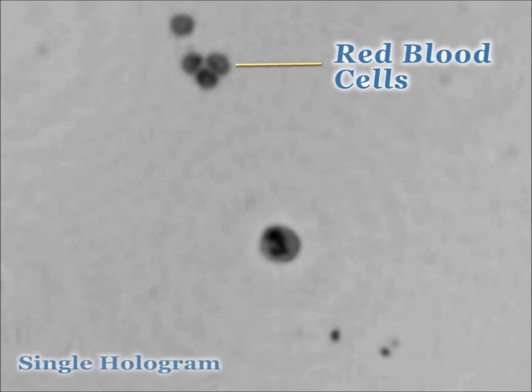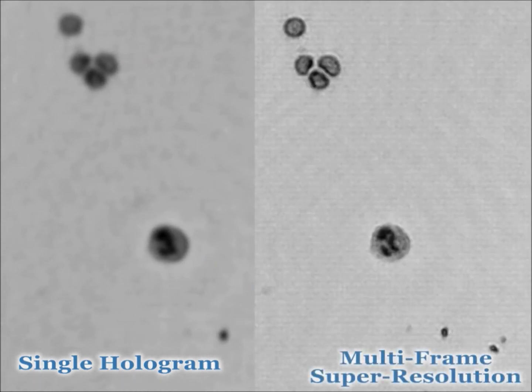The resolution of these images is good enough to distinguish between red blood cells and white blood cells, but we can improve on this by processing multiple images of the same object with an algorithm called pixel super resolution.